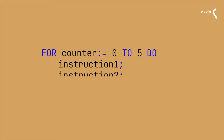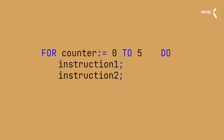The instruction which follows in the next line will be executed six times in our example. The instructions are executed as long as the counter variable is not greater than the end value you have chosen. When the instructions are executed, the counter variable is always increased by a certain step size. This step size can have any integer value, and you can define it by writing BY and then the step size behind it. If you don't define the step size, it is one by default. You close the loop with END_FOR.